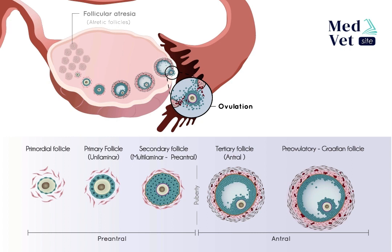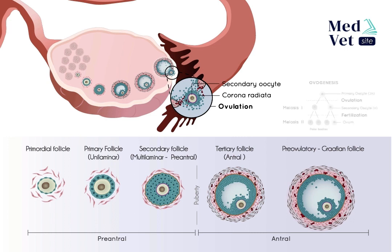After ovulation, the primary oocyte released from the dominant follicle continues to be surrounded by a group of granulosa cells known as the corona radiata, which must be crossed by sperm for fertilization to occur. These cells perform metabolic and mechanical functions, contributing to oocyte development and maturation while also protecting it from possible damage during its journey through the fallopian tubes. The primary oocyte becomes a secondary oocyte just after ovulation, as it is at this moment that meiosis I — which had begun and was paused at the diplotene stage — is completed.